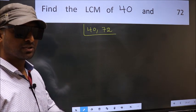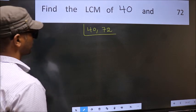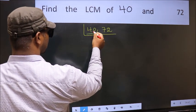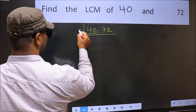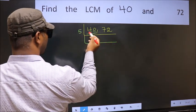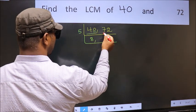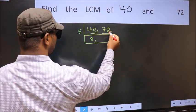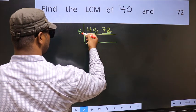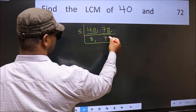Now focus on the first number, which is 40. The last digit is 0, so directly take 5. When do we get 40 in the 5 table? 5 times 8 is 40. The other number, 72, last digit is neither 0 nor 5, so it is not divisible by 5. So we write it down as it is.